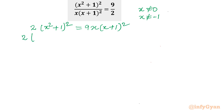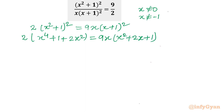I will use the algebraic expansion formula (a + b)² = a² + b² + 2ab. On the right-hand side, 9x times (a + b)² gives a² + 2ab + b². Expanding, I write 2x⁴ + 2 + 4x² equal to 9x³ + 18x² + 9x.